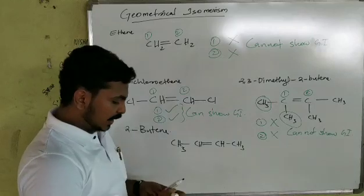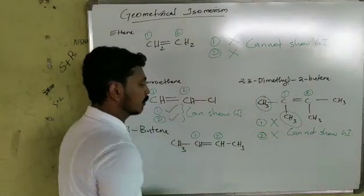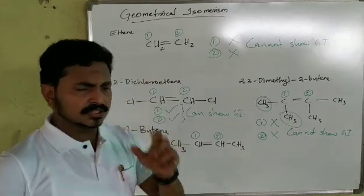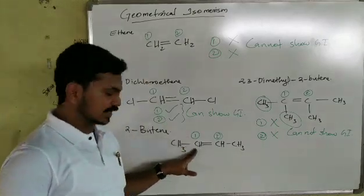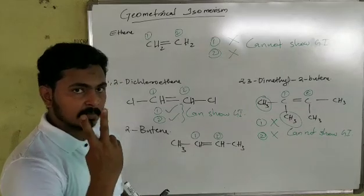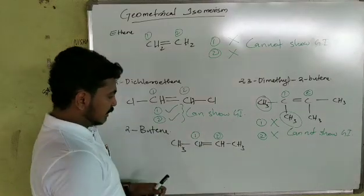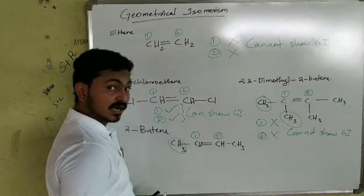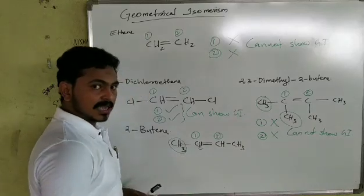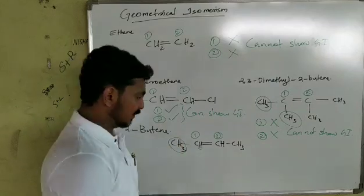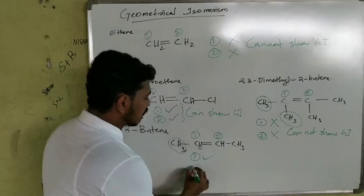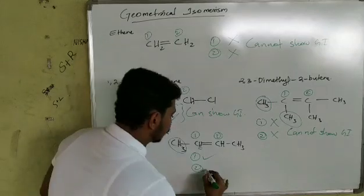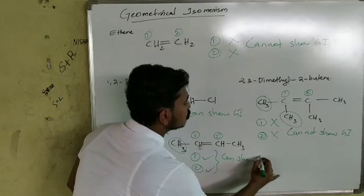For double-bonded carbon, each carbon has 4 bonds: one double bond and two single bonds. Carbon 1 and carbon 2 are connected by a double bond. The other two substituents on each carbon are CH3 and hydrogen. Since CH3 and hydrogen are different, the condition is satisfied and this compound can show geometrical isomerism.